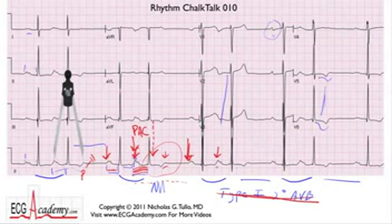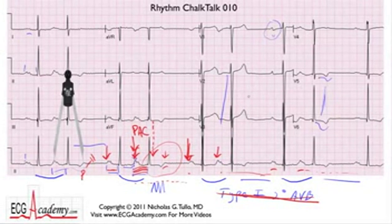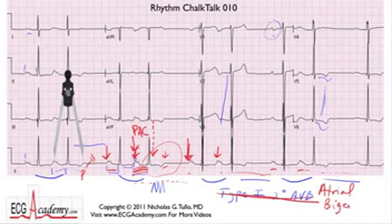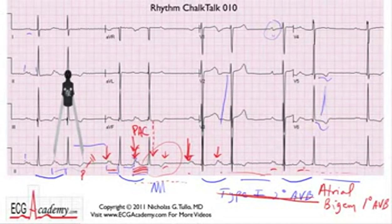So you have a pattern of sinus beat, PAC, compensatory pause — sinus beat, PAC, compensatory pause. What do we call the pattern when an ectopic beat occurs every other beat? It's bigeminy. This is atrial bigeminy with a first degree AV block, but there's no second degree AV block here. All the P waves conduct. The bigeminal pattern makes you think that it's Wenckebach three-to-two, but it's not. It's a common mistake that people make.